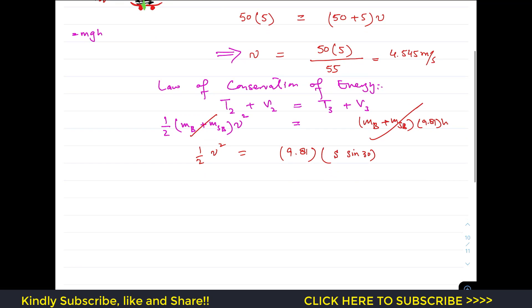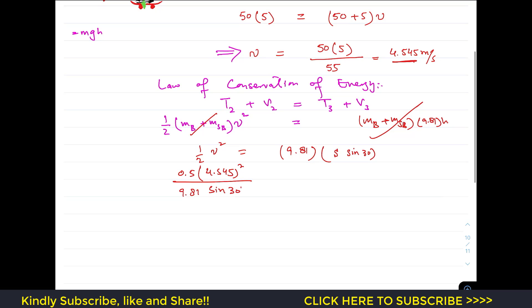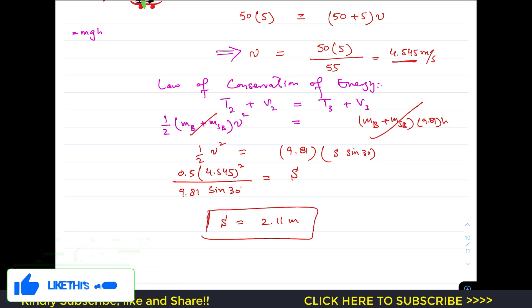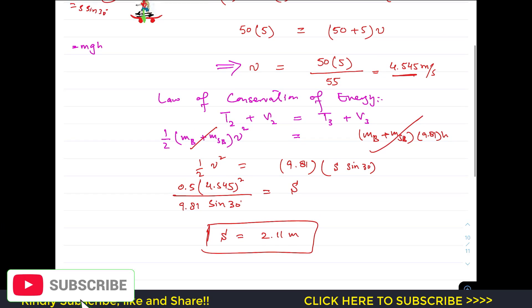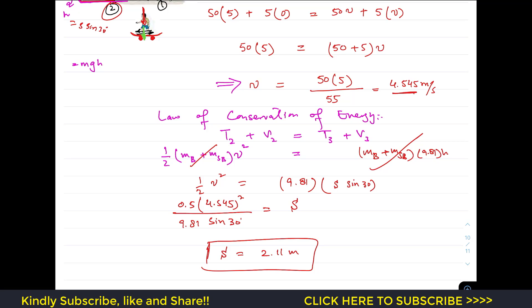We want to find s, the distance traveled along the incline. We know v is the common velocity 4.545 m/s, so: s = 0.5 times (4.545)² divided by (9.81 times sin(30°)). This gives us the distance traveled along the incline equal to 2.11 meters. That is the solution to this particular problem. I hope this helps in your learning — do let me know in the comments, and subscribe to my channel if you haven't done it yet.